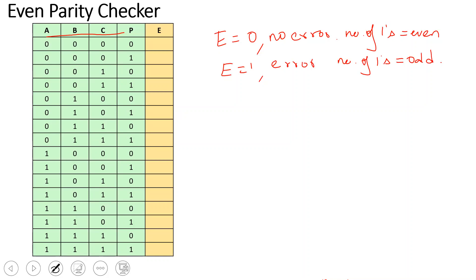The truth table will be used to verify this. For 4-bit input, there are 16 combinations of input, from 0000 to 1111. For the first combination 0000, the number of 1s is zero — which is even — so the error E equals 0. For the next combination 0001, the number of 1s is odd, so there is an error and E equals 1.